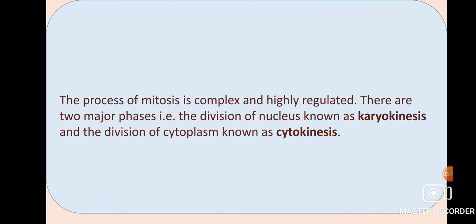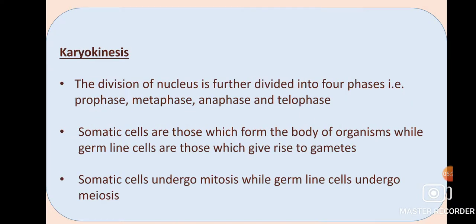The division of the nucleus — karyokinesis — is further divided into four phases, because the nuclear material must be carefully carried on to the next generation. This is a complex process that happens step by step. The four phases are: prophase, metaphase, anaphase, and telophase. These are the phases of nuclear division.